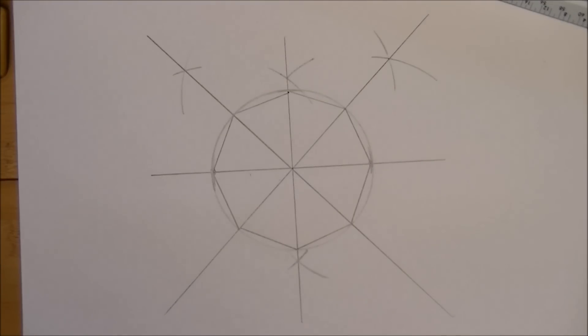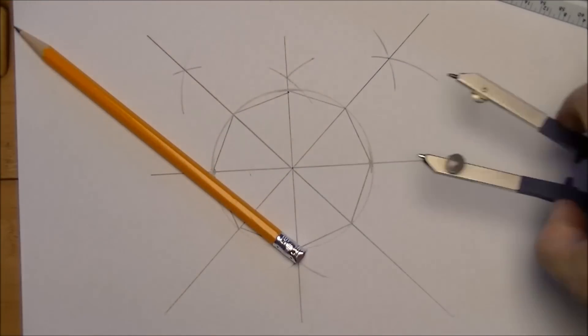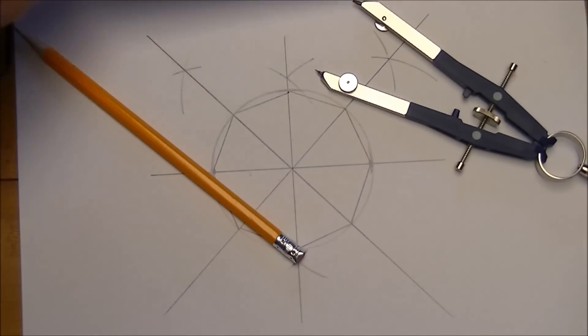There you go, you have a regular octagon created using just a pencil, a compass, and a straightedge.